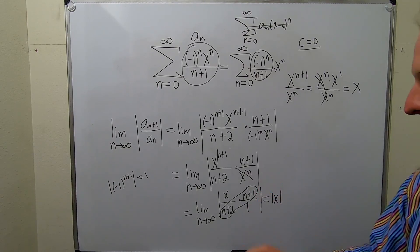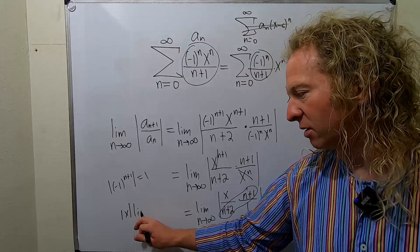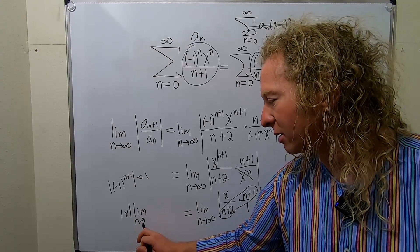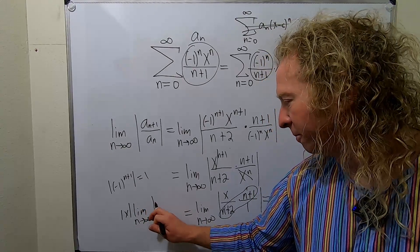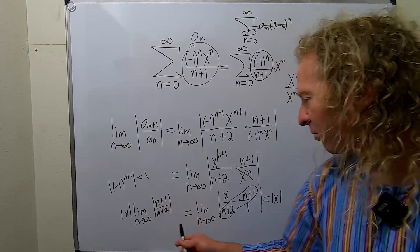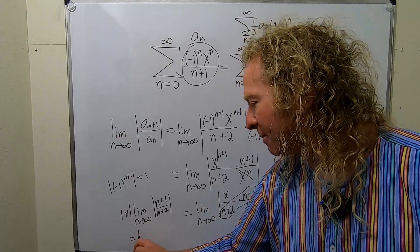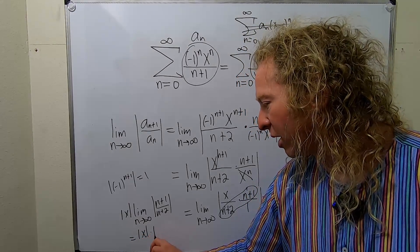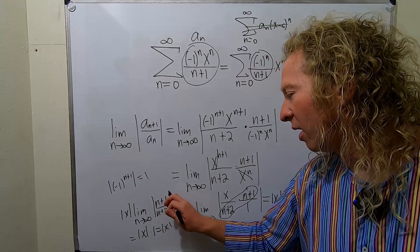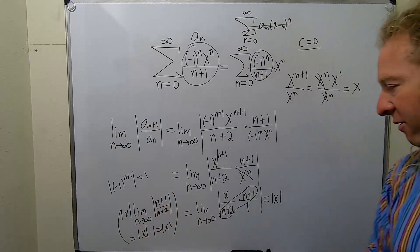If that's confusing you can do the following. You can actually pull out the absolute value and write it like this. I usually don't do this, but some people like to see this. Because there's no x's here in the limit, you can just pull it out. And this is the absolute value of x times one, so it's just the absolute value of x. Another way to think about it. You can always do stuff like that.